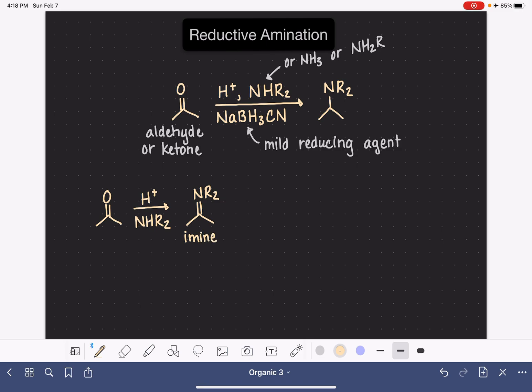The sodium cyanoborohydride that's present is only reactive towards imines. So you can have the sodium cyanoborohydride with the aldehyde or the ketone. Nothing is going to happen. Once the imine is synthesized, the carbon-nitrogen bond is reduced from a double bond to a single bond, and you end up with, in this case, a tertiary amine.